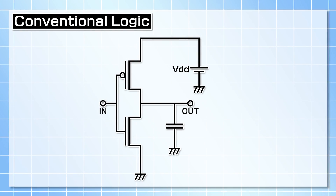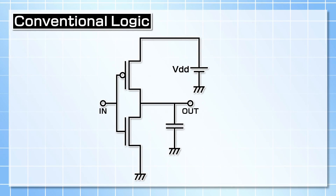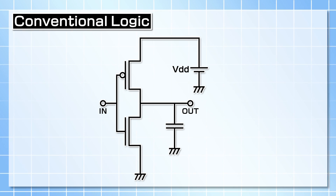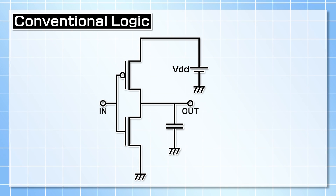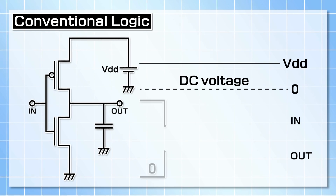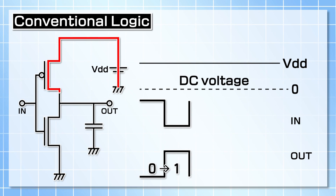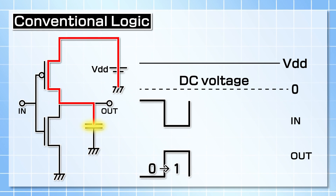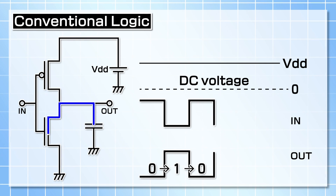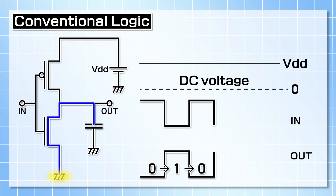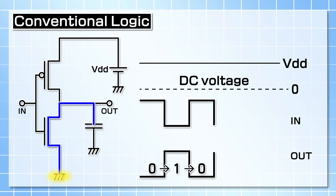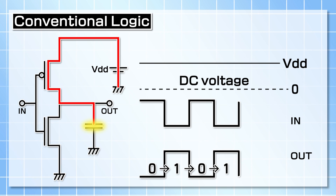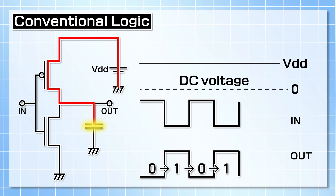Current ICs consist of static CMOS logic, which is driven by a DC power supply. The operation of this logic is that when the state of the input signal changes from 1 to 0, the output node is charged and the upper side transistor is switched on. Hence, a sudden current flows through the transistor, and then the output node changes from 0 to 1.